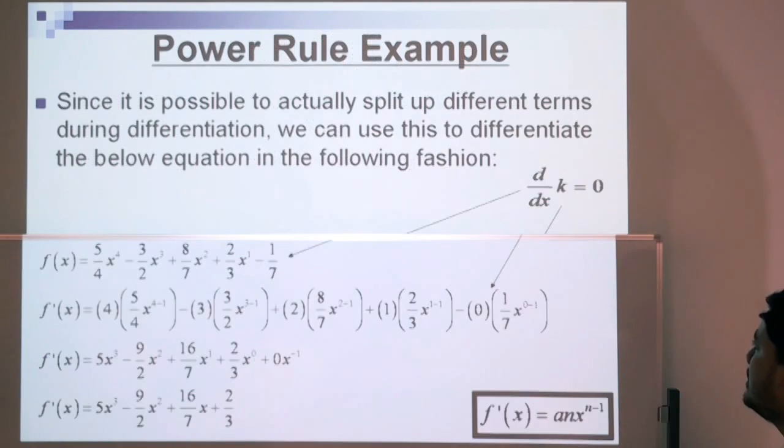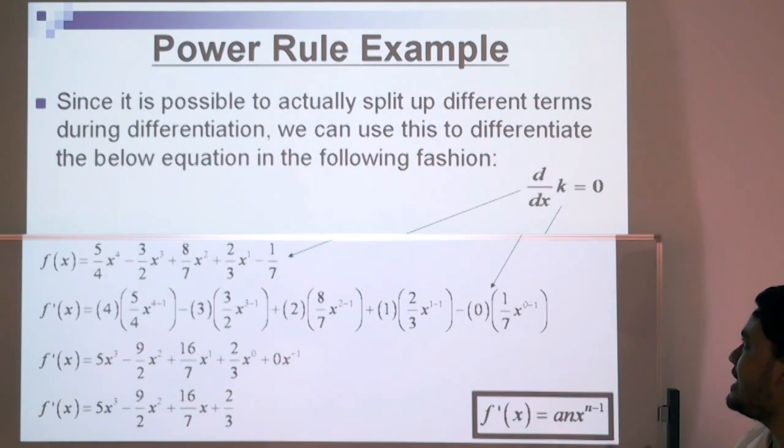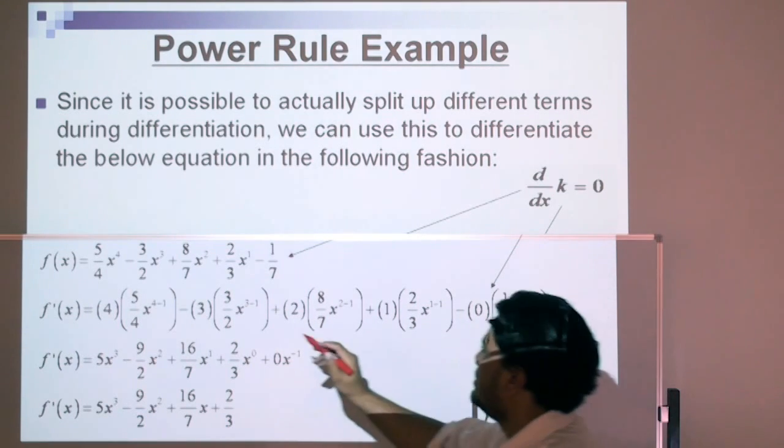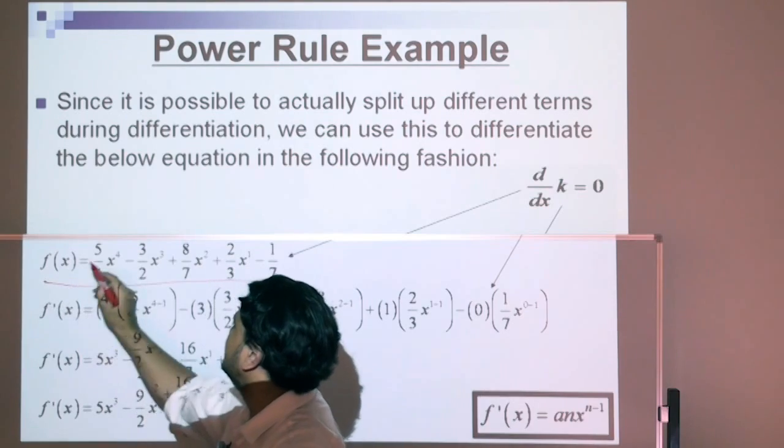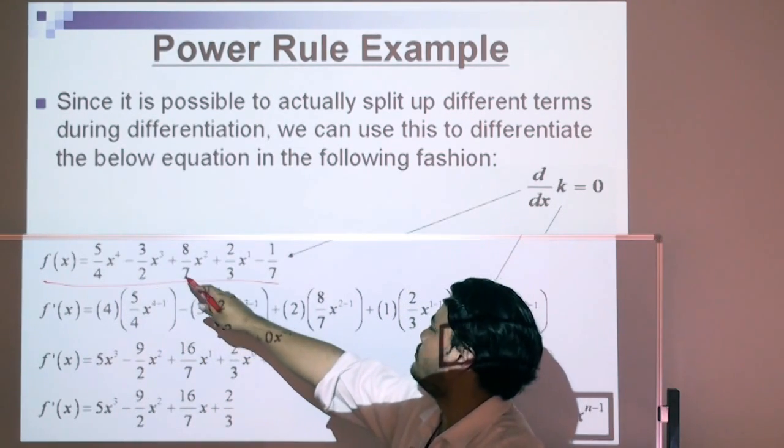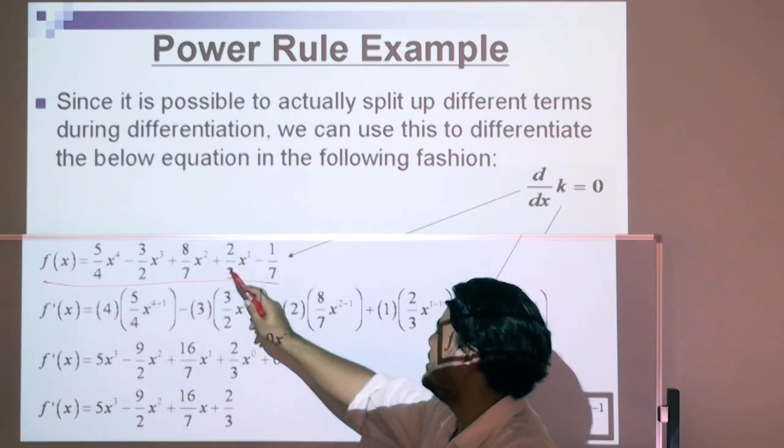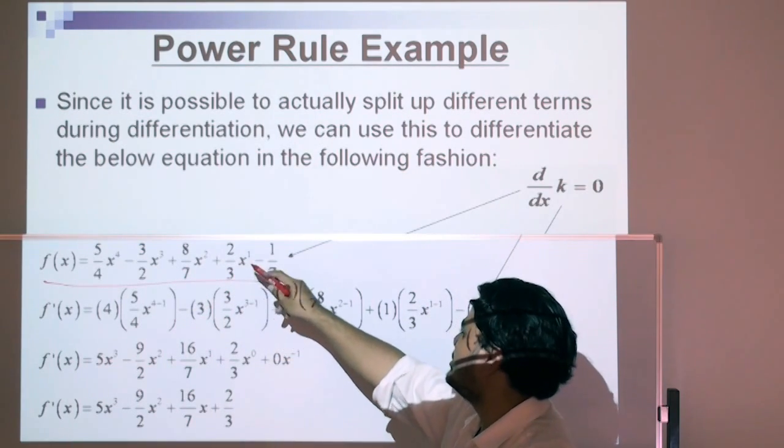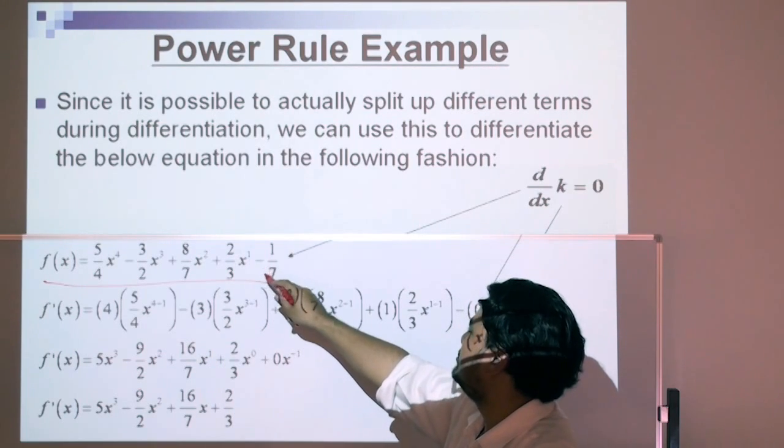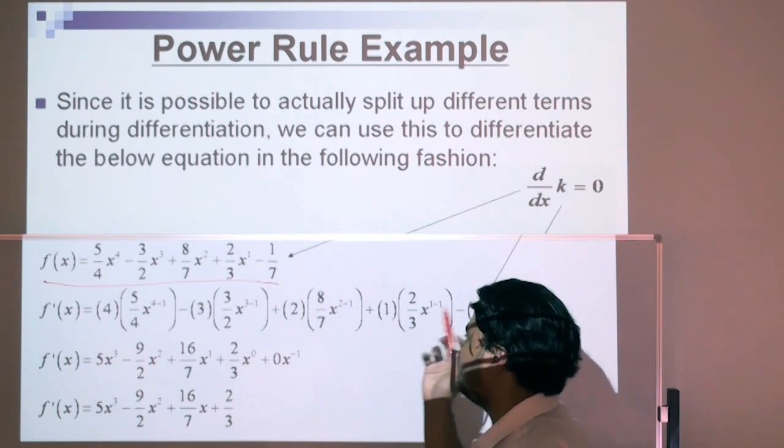Here's another example, a harder example for the power rule. Since it is possible to actually split up different terms during differentiation, we can use this to differentiate the below equation in the following fashion. A function of x: 5 over 4 x to the power of 4, minus 3 over 2 x to the power of 3, plus 8 over 7 x squared, plus 2 over 3 x to the power of 1, minus 1 over 7.